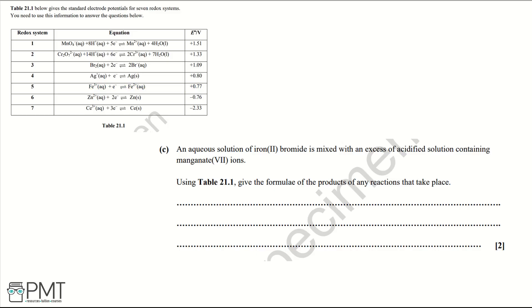Part C: An aqueous solution of iron 2 bromide is mixed with an excess of acidified solution containing manganate 7 ions. Using Table 21.1, give the formula of the products of any reactions that take place.